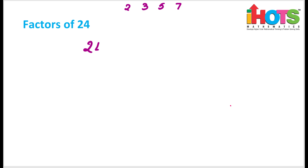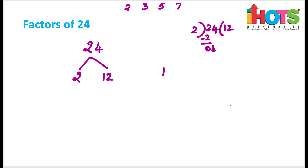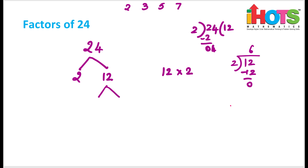Let me now take 24 as an example. The first step is to divide by 2. When you divide 24 by 2, you get 12. So you have 2 into 12, meaning 2 and 12 are factors. Now again, 12 can be divided by 2, and you will get 6. So we know that this is 2 into 6.